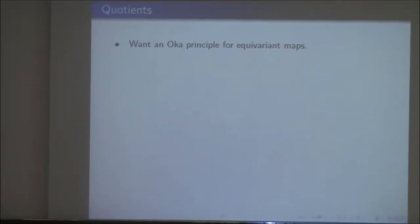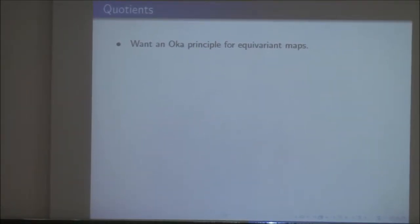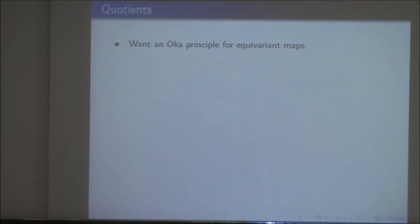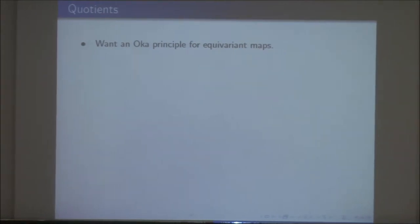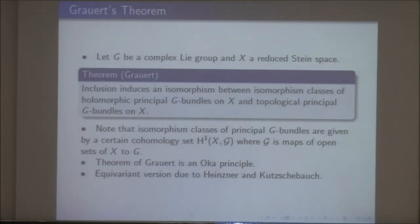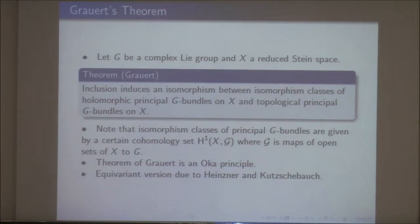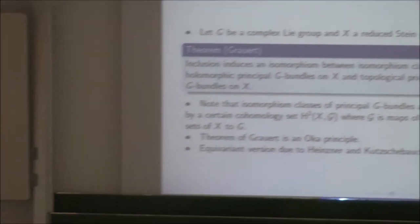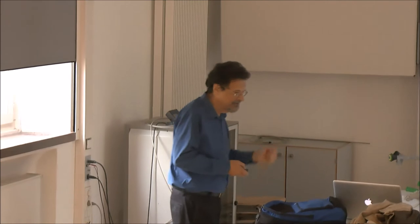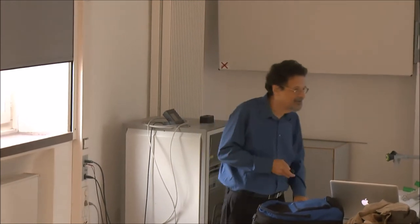When you say complex Lie group, are you excluding the unipotent case? Yes, sorry — the group that's acting is reductive. The equivariant version involves a reductive group.